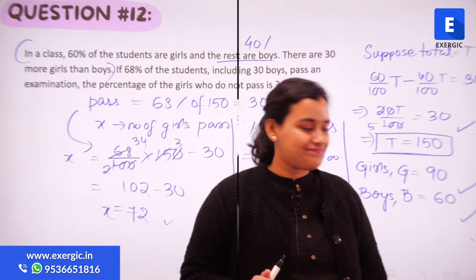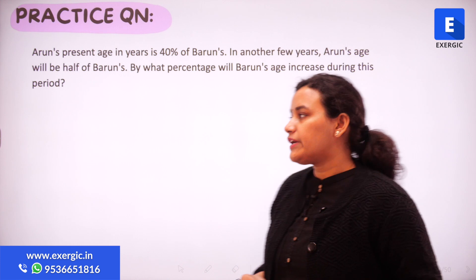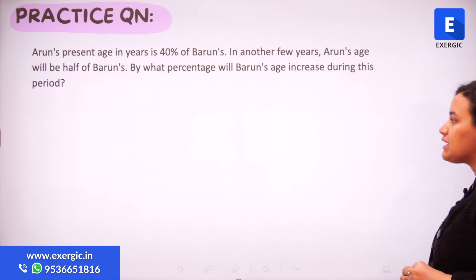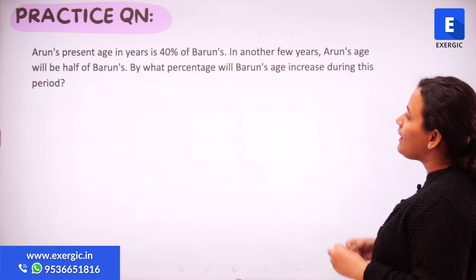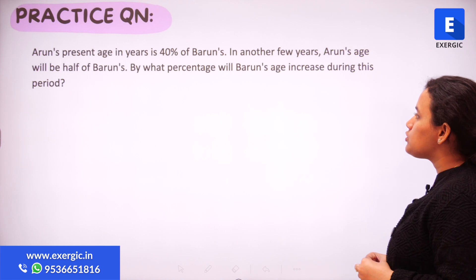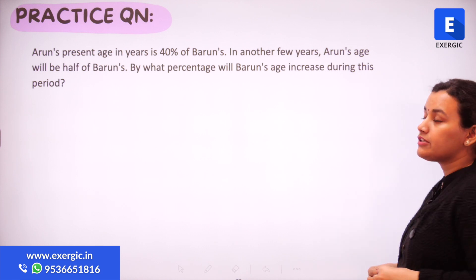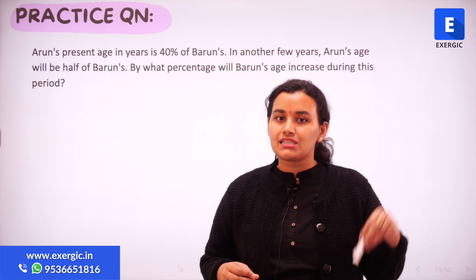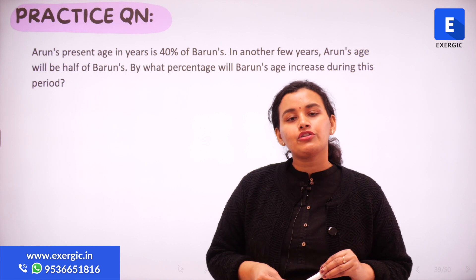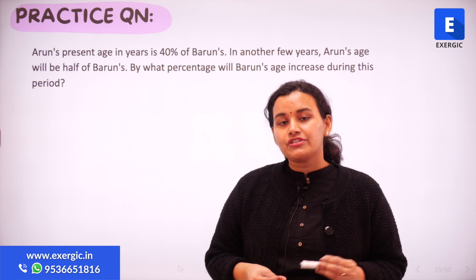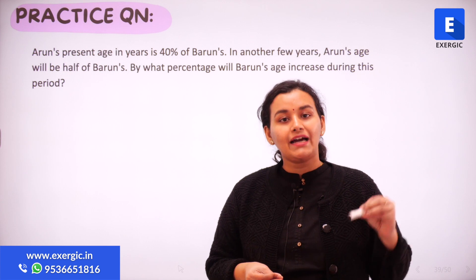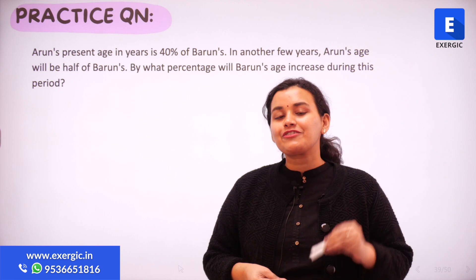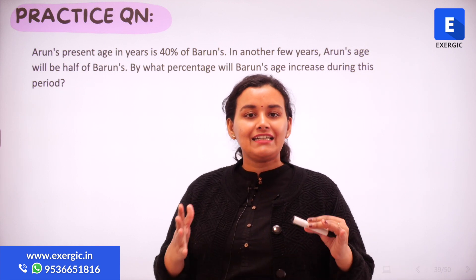Here's the practice question for you: Arun's present age in years is 40% of Barun's. In a few more years, Arun's age will be half of Barun's. By what percentage will Barun's age increase during this period? Give this question a try and leave your answers in the comments below. Share this video, subscribe to the channel, and like the video — I'll see you tomorrow with another quantitative aptitude question.